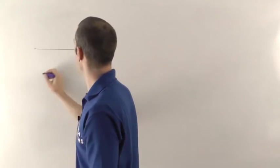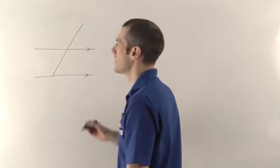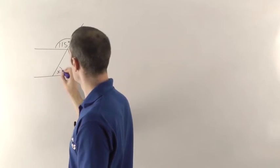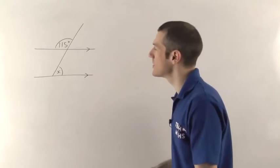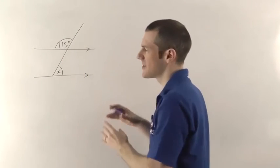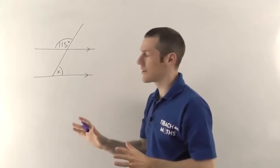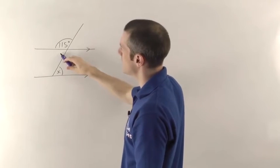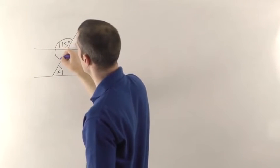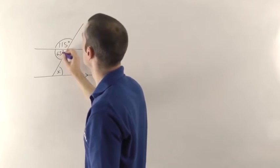So let's say we have a pair of parallel lines — we stick the arrows on to indicate they're parallel — and another line crossing them. I'll tell you that this angle is 115 degrees, and we want to find X. To connect 115 with X, we can first find an intermediate angle on a straight line: 180 minus 115 gives us 65 degrees.